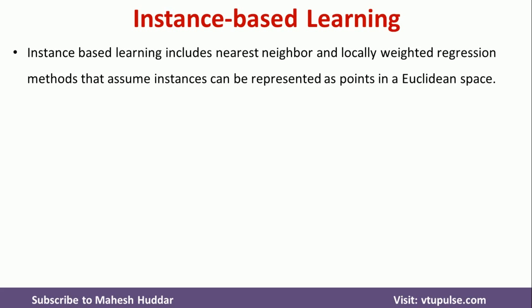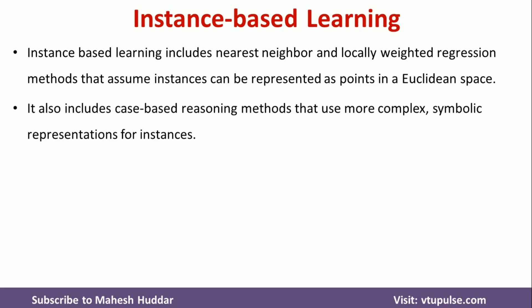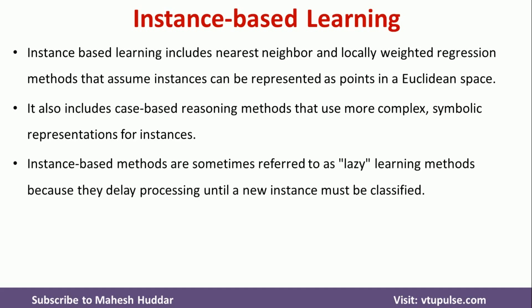Instance-based learning includes nearest neighbors and locally weighted regression methods, which assume that instances can be represented as points in Euclidean space. It also includes case-based reasoning methods that use more complex symbolic representations for instances. Instance-based methods are sometimes referred to as lazy learning methods or delayed learning methods, because they delay processing until a new instance must be classified.